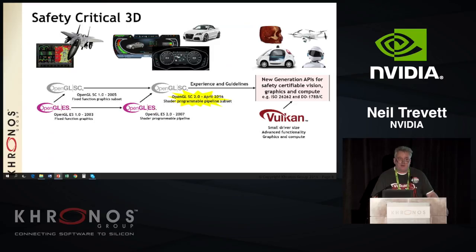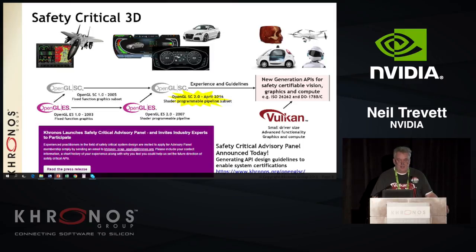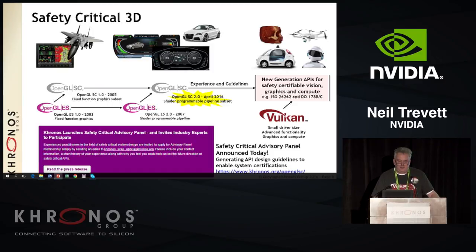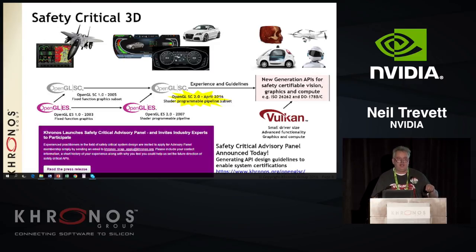Looking forward, there's going to be a bunch of Khronos APIs that will need consideration for safety critical certification as they're designed, or perhaps we'd even need to do safety critical versions. Vulkan is an interesting starting point — we're talking to a lot of the safety critical folks. Because it's a small driver, that's a good starting point. Today we did a press release: we've decided to set up a safety critical advisory panel that's going to create design guidelines for safety criticality, open to Khronos members but also inviting industry experts.